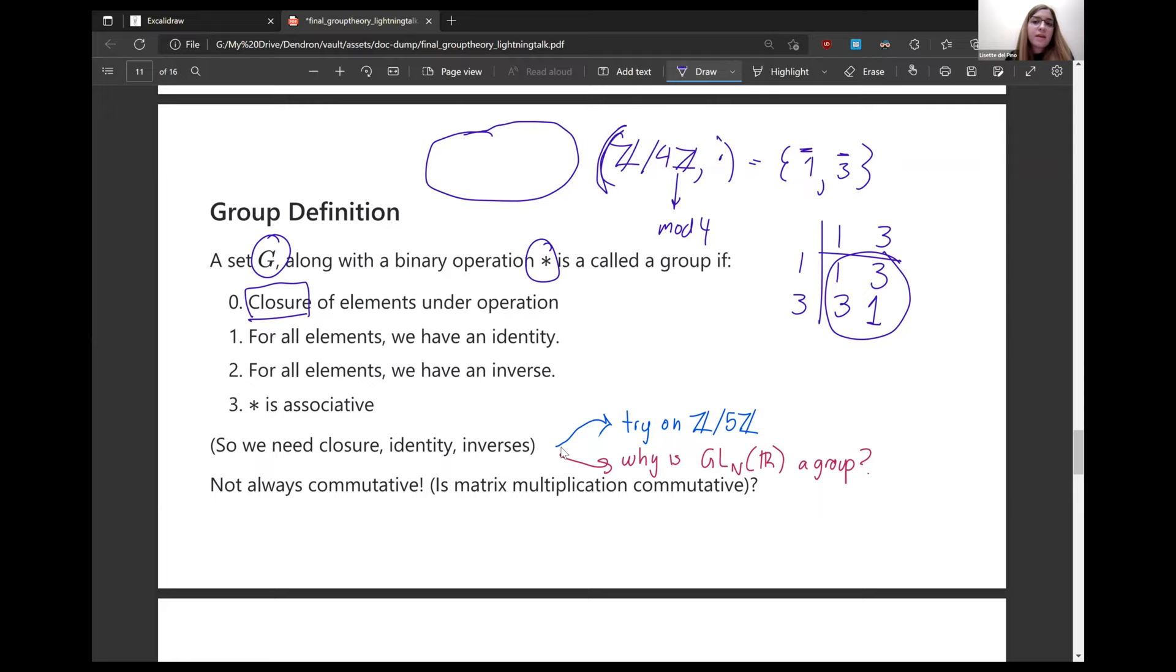Let's make a multiplication table for these to see if we stay inside of this group. One times one is one, one times three is three. Three times three is nine. But we are in mod four. So nine mod four is actually one. This is cool. We multiplied everything in the group together that could possibly exist, and we got back only elements that were in the group. So I can say for sure that these elements have closure.